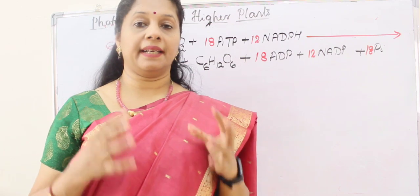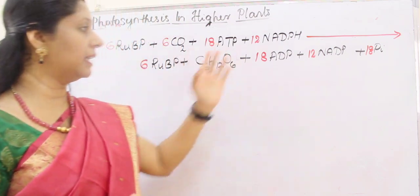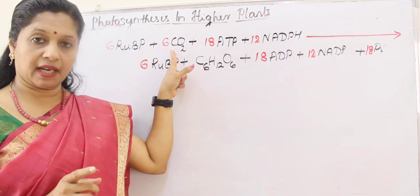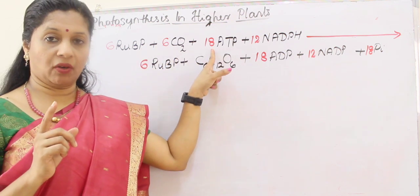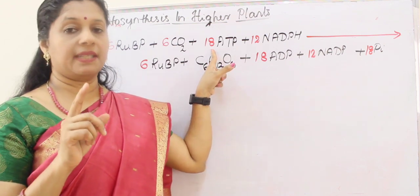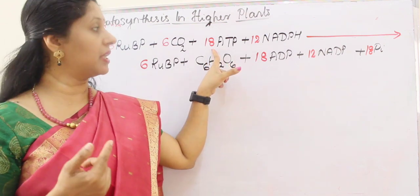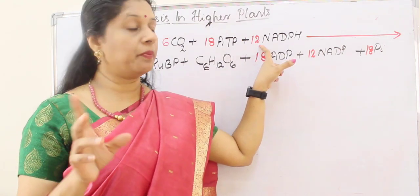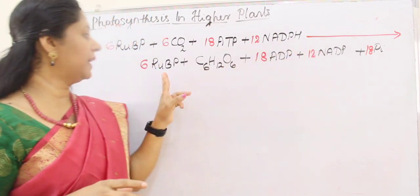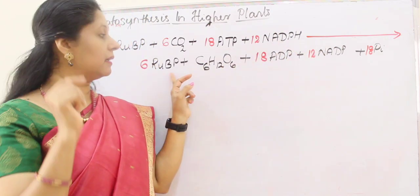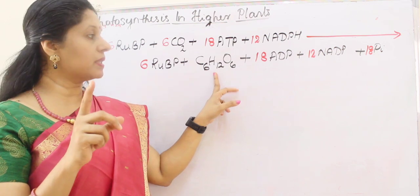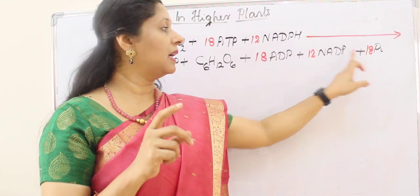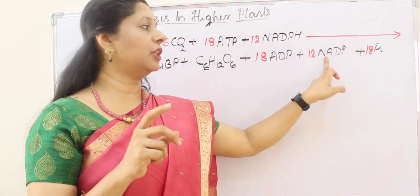To summarize the entire dark reaction: 6 molecules of RUBP combine with 6 molecules of CO2, utilizing a total of 18 ATP — 12 for reduction and 6 for regeneration — and 12 NADPH for reduction of 1,3-PGA to PGAL. The result is regenerated RUBP and 1 molecule of glucose. The 18 ATP become 18 ADP and 18 phosphate groups, and NADPH is converted to NADP⁺.